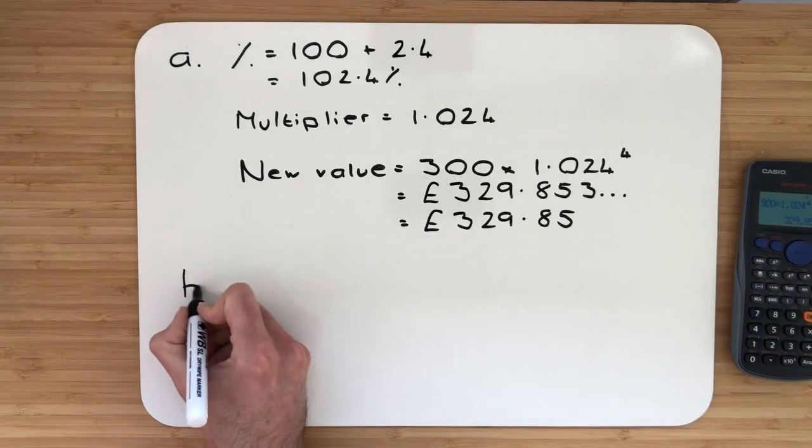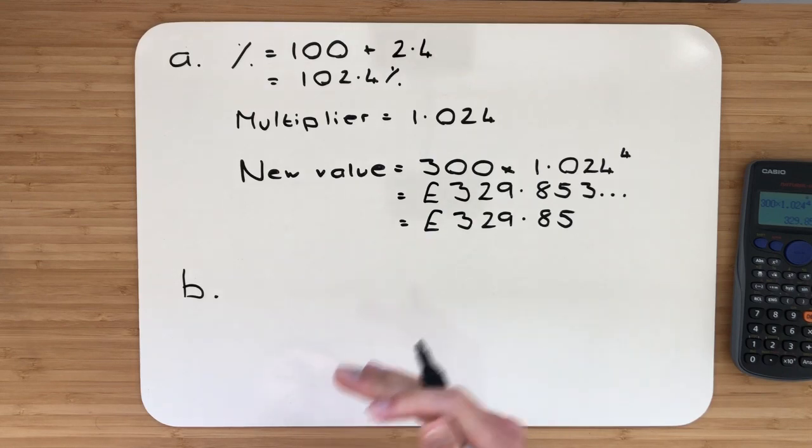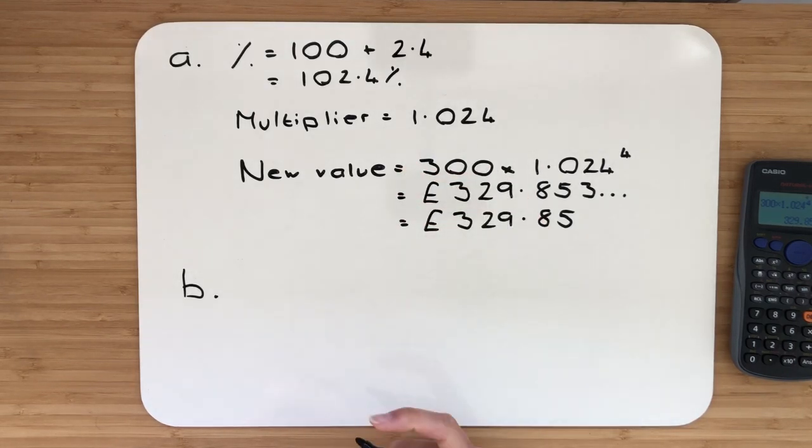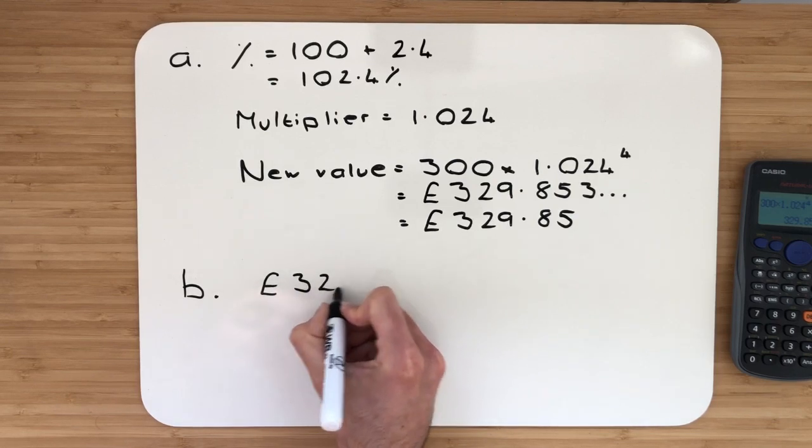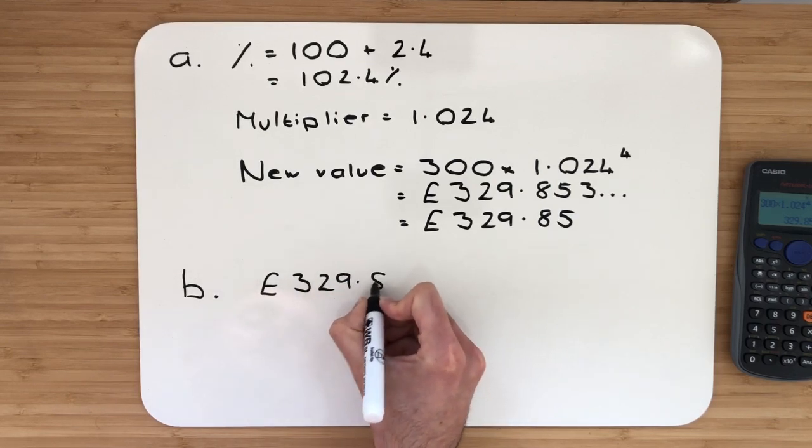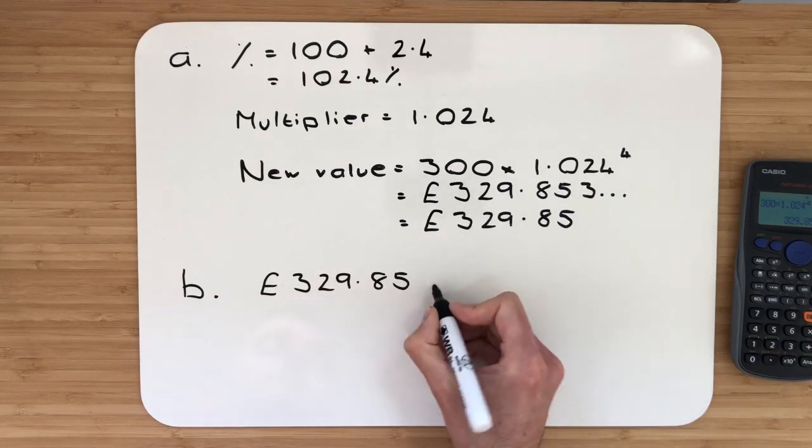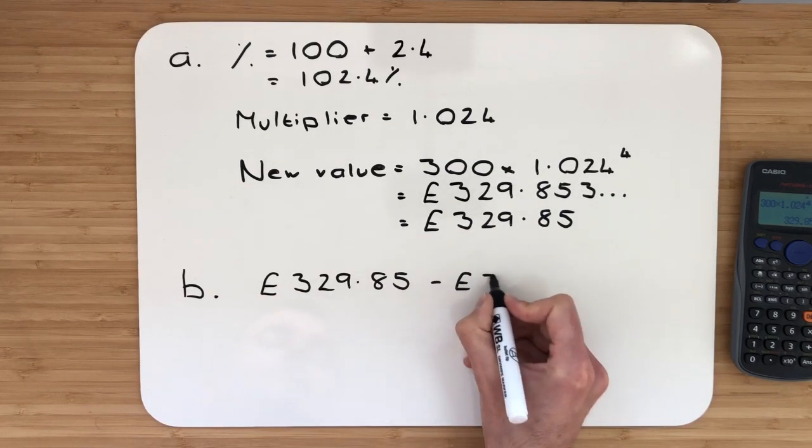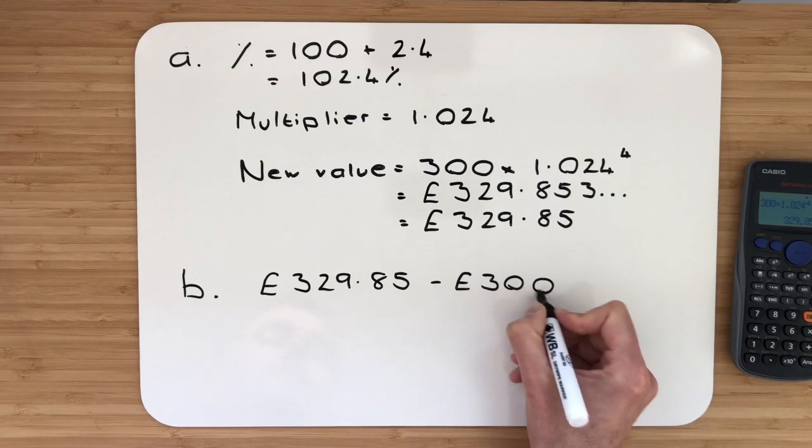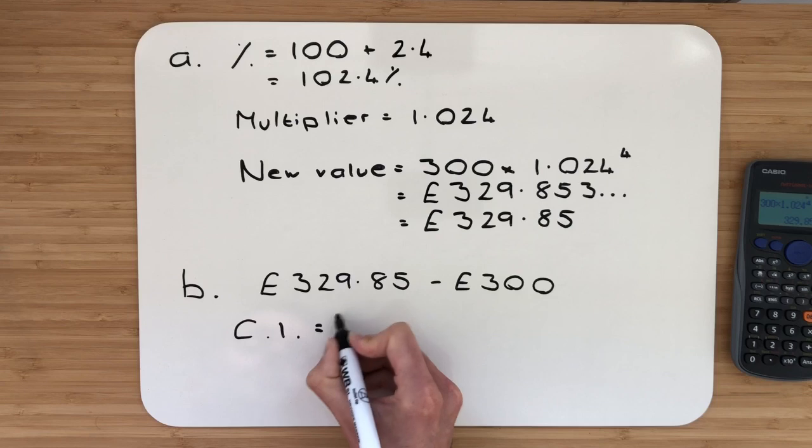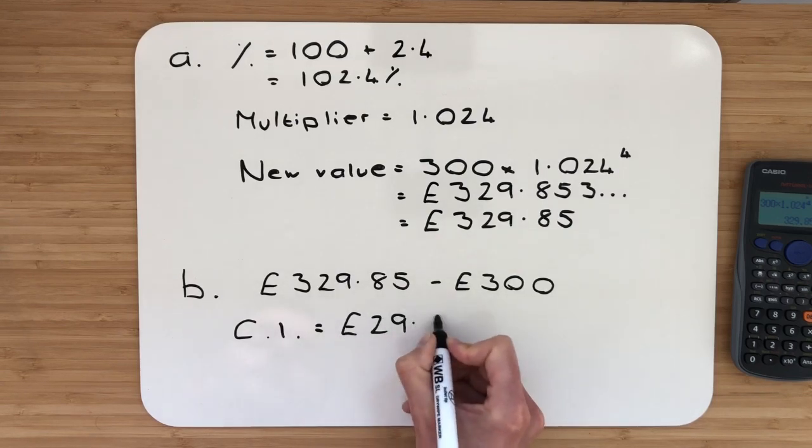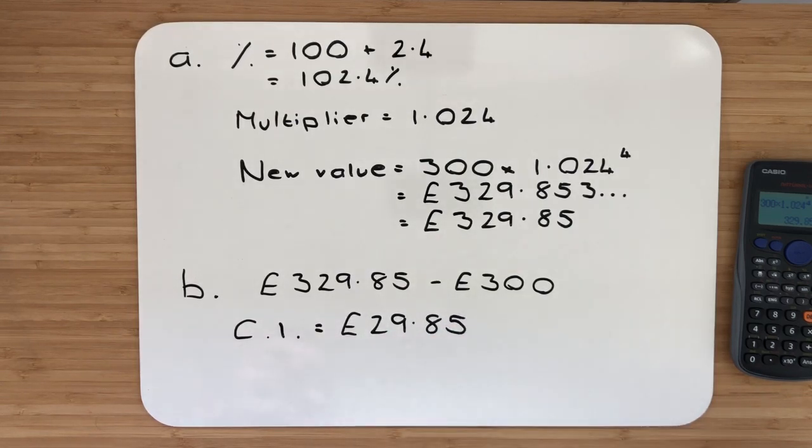In Part B, it says 'hence,' which means we need to use an answer from above. Calculate the compound interest. The compound interest is the total amount of money we've gained over a period of time. At the moment, we now have £329.85 in our bank. We started with £300, so all we're going to do is subtract that away. The compound interest will be equal to £29.85.